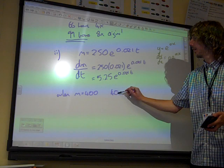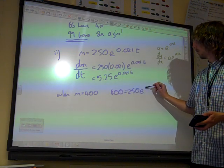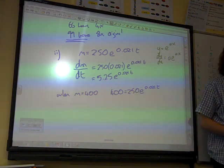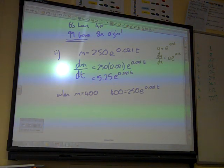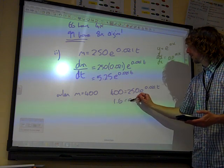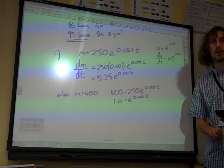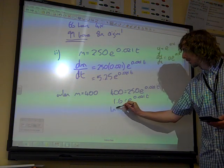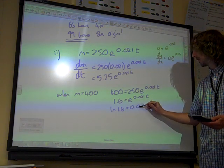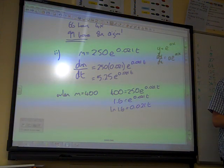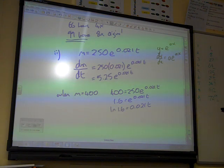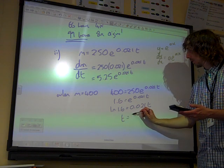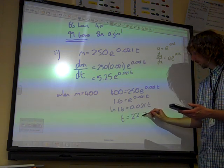When m equals 400, 400 is 250e to the 0.021t. That gives us 1.6 is e to the 0.021t. We're solving basically the same equation twice. But anyway, we get 1 over 0.021 times natural log of 1.6 gives me 22.38.